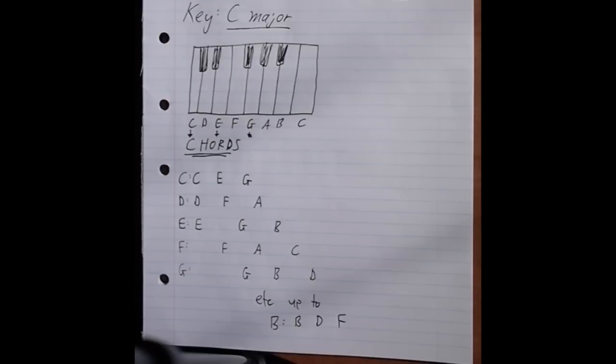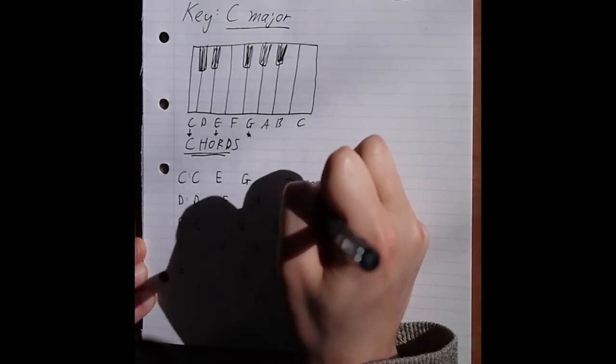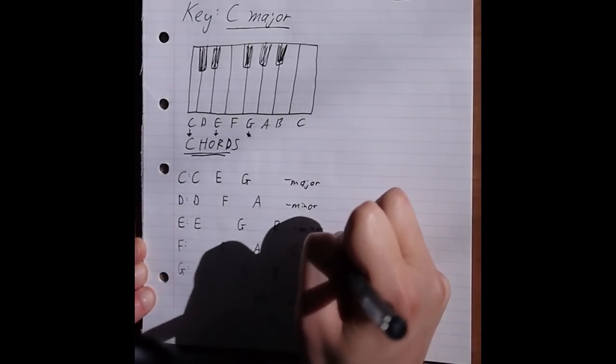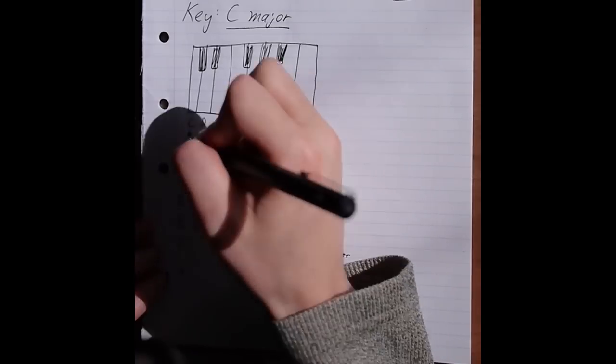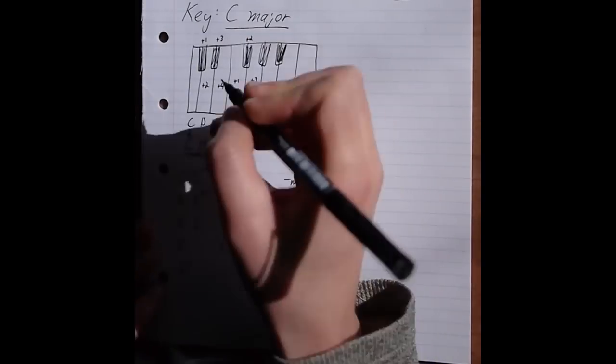Now, some of these sound different than others, and that's because the notes have a different number of semitones between them. So if you count up, including the black notes, the C chord is plus 4 to get C to E, then plus 3 to G, so that's a major chord.